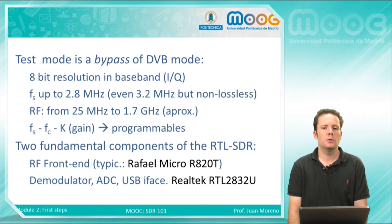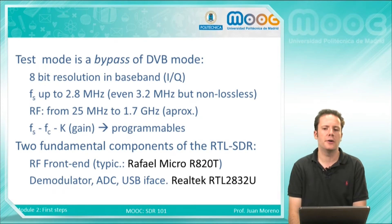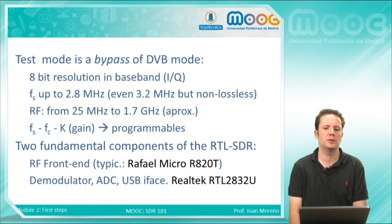This hardware has two fundamental components: the RF front end, which typically uses the Raphael Micro R820T chip, and also the demodulator and analog-to-digital converter, the Realtek RTL2832U.